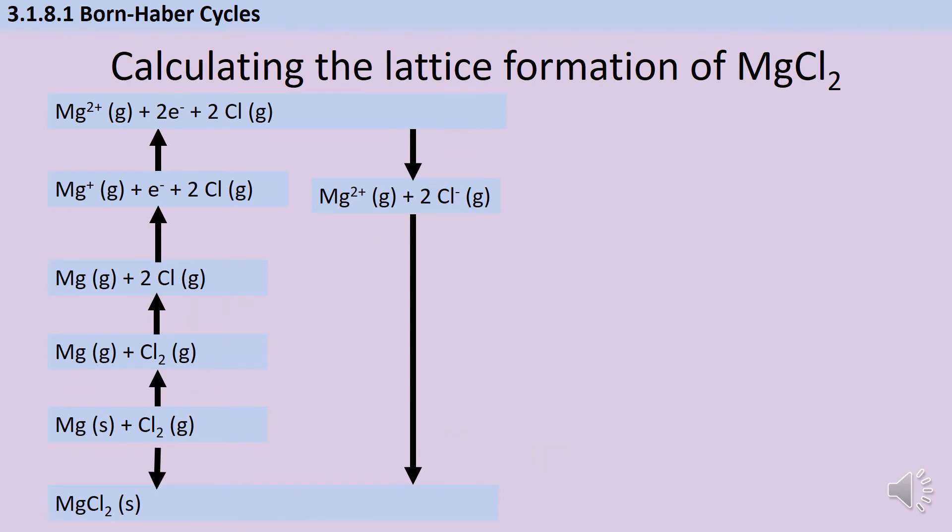Once you know how to draw these Born-Haber cycles, there isn't a huge amount of variation in the questions, but there are a couple of little things that could trip you up, so let's just look at those now. If we think about magnesium chloride, of course we're going to need two chloride ions for every one magnesium ion. So when it comes to the enthalpy of atomisation of chlorine, I'm going to need two sets of that value, because I'm going to need to make two moles of chlorine atoms.